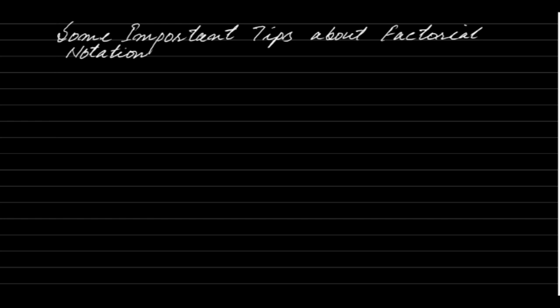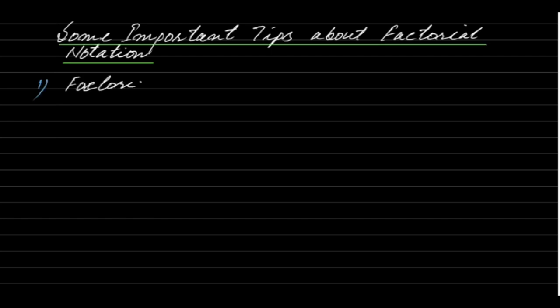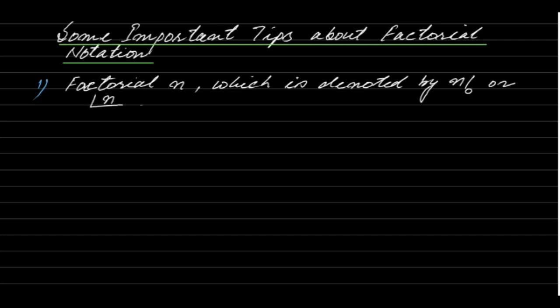Some important tips about factorial notation. Number 1: factorial N is defined only for all N belonging to non-negative integers, or whole numbers. Factorial is not defined for any fractional number like 2/3 or 4/7, nor for any negative integer like −1, −2, −3. It is only defined for non-negative integers: factorial 0, factorial 1, factorial 2, and so on.